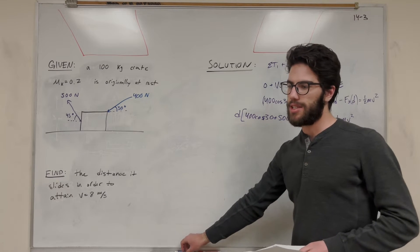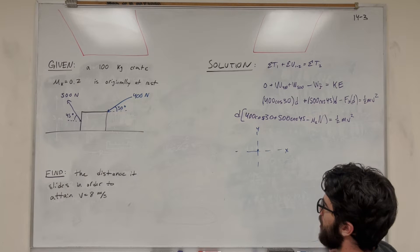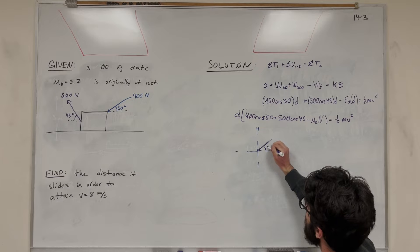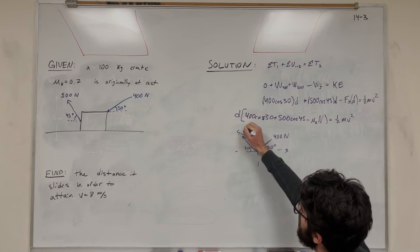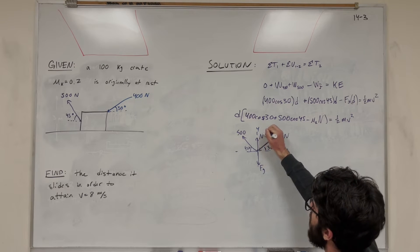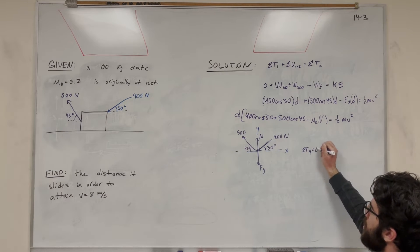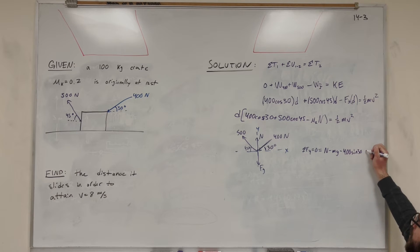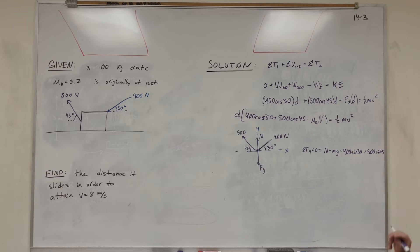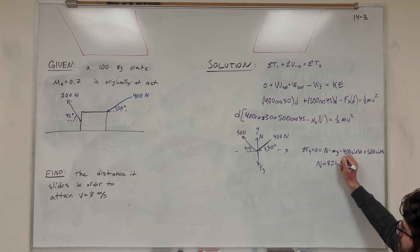We need to find the normal force, so let's make a free body diagram of the box. Here's the x-direction and y-direction. The 400 newton force is at 30 degrees, and the 500 newton force is at 45 degrees. Gravity pushes down and the normal force pushes back up. Summing forces in the y-direction equals zero because we're not accelerating vertically: normal minus mass times gravity, minus 400 sine of 30, plus 500 sine of 45 equals zero. With mass equal to 100 kilograms and gravity 9.81, the normal force works out to 827 newtons.